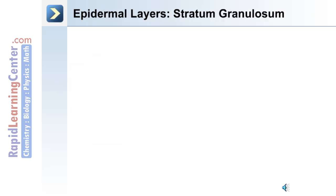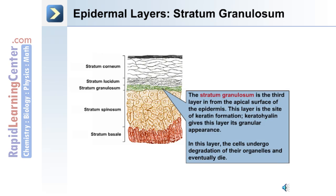The next layer, which is in all areas of the body, is the stratum granulosum. It's the third layer from the apical surface and this is the site of keratin formation. Keratohyalin gives this layer its granular appearance under the microscope. In this layer, cells undergo degradation of their organelles and eventually die and proceed to the upper layers.